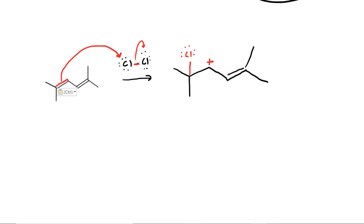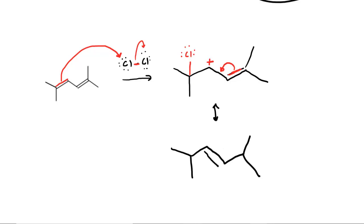Let's look at that resonance structure. We take the neighboring pi bond and swing it over — almost like a door swinging on its hinge. A double-headed arrow signifies we are drawing resonance structures. By swinging that double bond over, we place it in the new position. The original chlorine remains, and the positive charge shifts over to the carbon on the far end. The chloride ion formed in step one, which has the negative charge, can now attack this newly positive carbon.